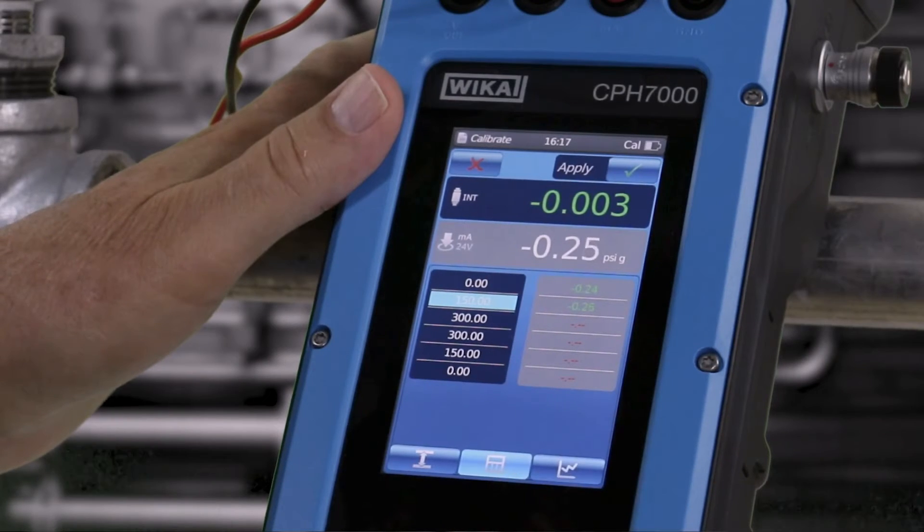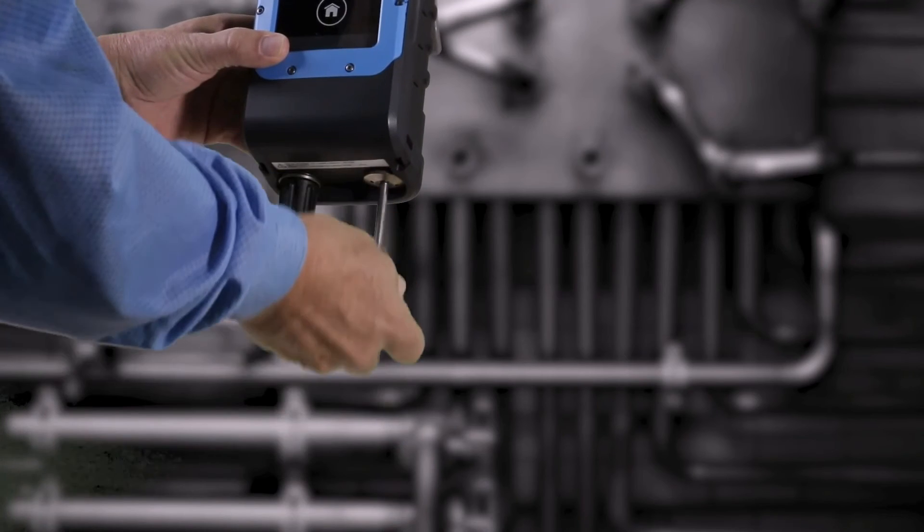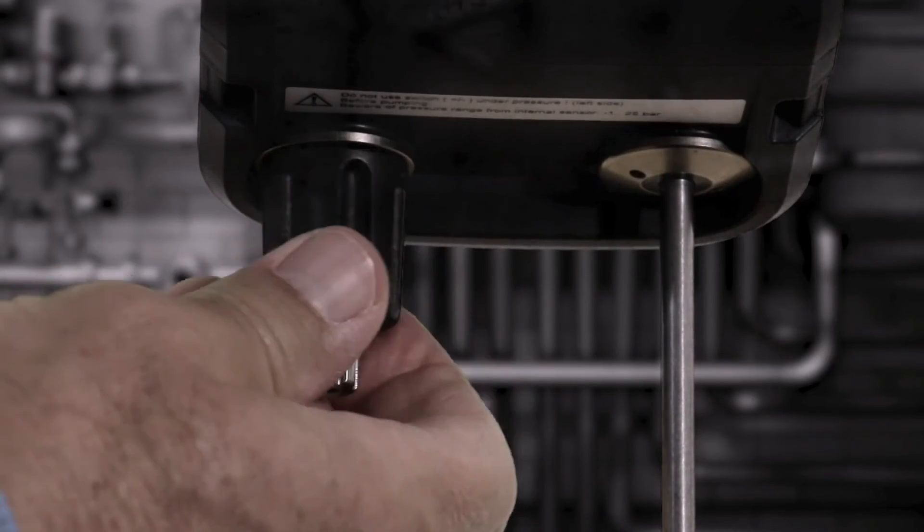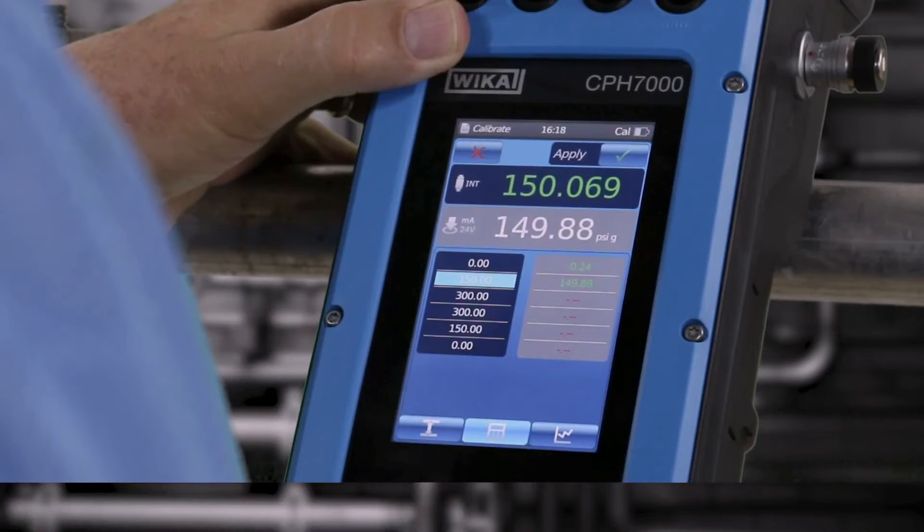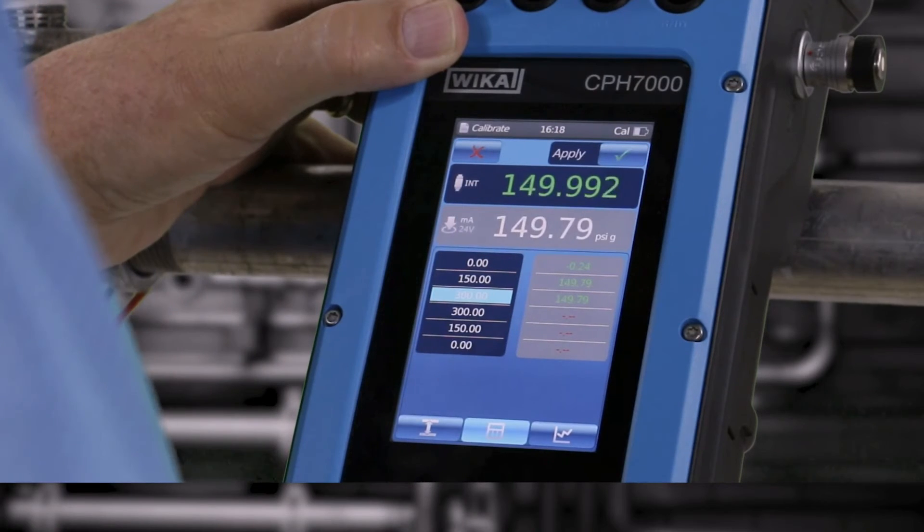Close the vent valve and pump up to the next pressure. Use the adjustment knob to reach the desired pressure. Press the check mark when the reading is stable. Continue until all the readings are recorded.